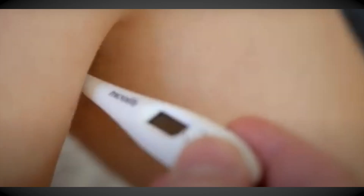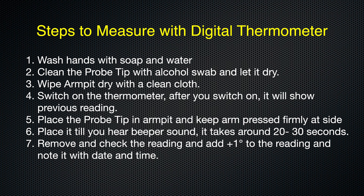Place the probe tip in the armpit as shown and keep the arm pressed firmly at the side until you hear the beep sound. It takes around 20 to 30 seconds. Now remove and check the reading — add plus one to the reading — and note it with the date and time.